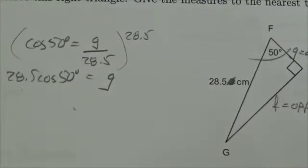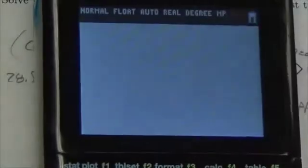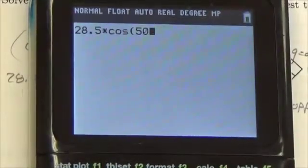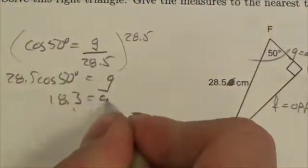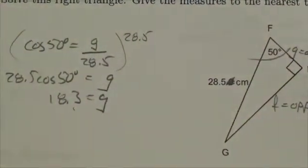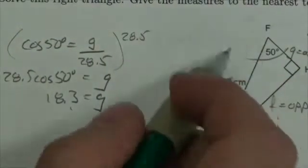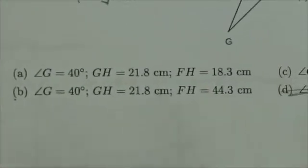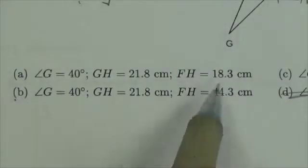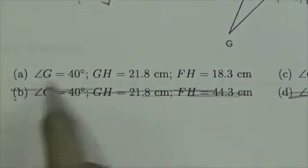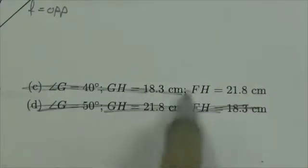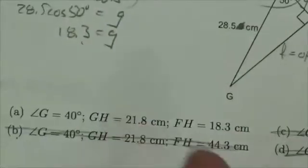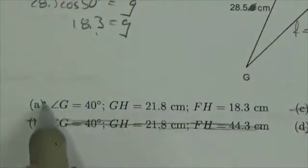Now we'll just calculate that: 28.5 times the cosine of 50. And we get 18.3 — so FH is going to be 18.3. Looking at the options, FH is 18.3, so it can't be the option where FH equals 44, and it can't be that one either. So that was a good choice to find that side — we know the answer has to be A.